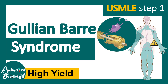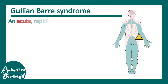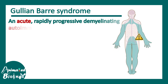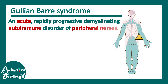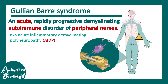In this video of the USMLE Step 1 High Yield Series, we will talk about Guillain-Barré syndrome. It is an acute, rapidly progressing, demyelinating autoimmune disorder of peripheral nerves. It is also known as acute inflammatory demyelinating polyneuropathy, in short, AIDP.